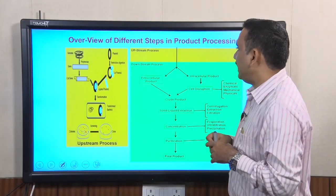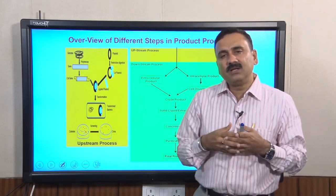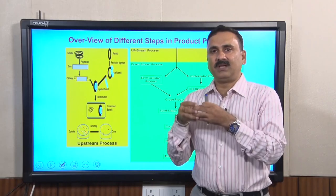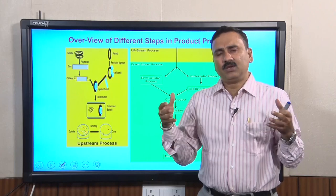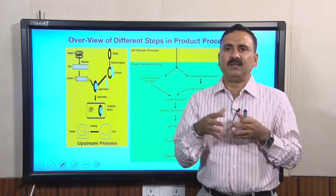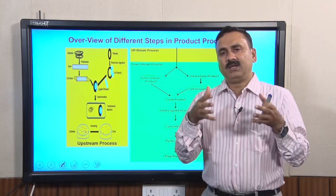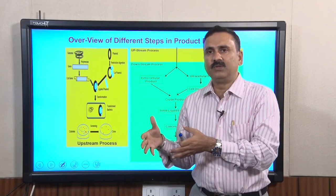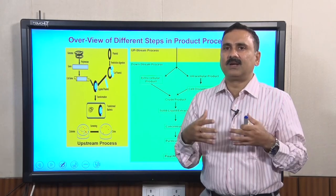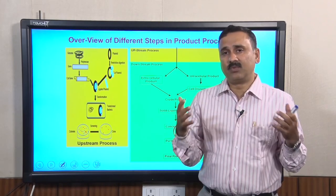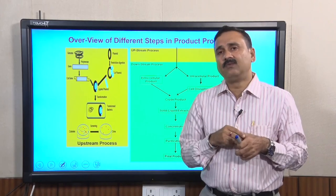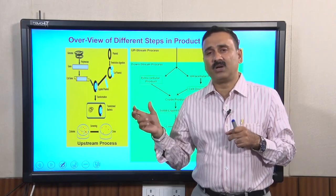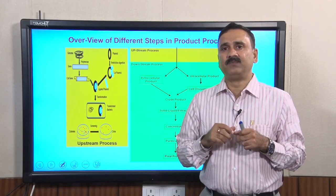With this we have discussed the different cell disruption methods available, which can be used based on the physical and chemical properties of the host. Each method has advantages and disadvantages. Depending on your requirements and infrastructure, you can choose any of these methods to extract or release content from cells overexpressing your protein or material. In our next lecture, we will discuss how to purify the product taken out from the cells. Thank you.